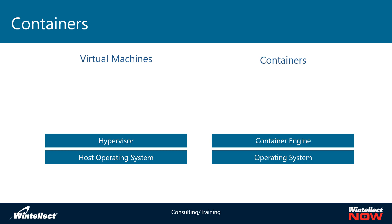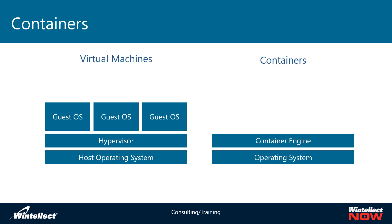The next layer is where containers and virtual machines diverge. With virtual machines, we abstract hardware and expose virtual hardware to a guest operating system. With containers, however, you don't expose virtual hardware — you expose what is more or less a virtual kernel. So it's a kernel-level abstraction versus a hardware-level abstraction.